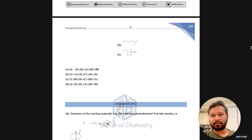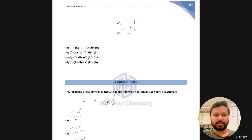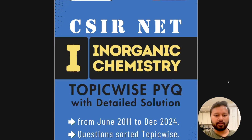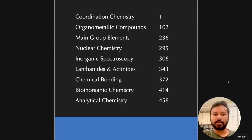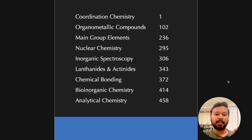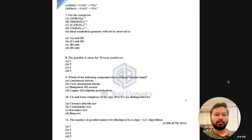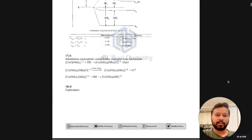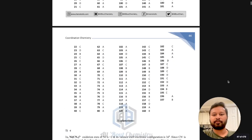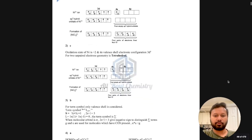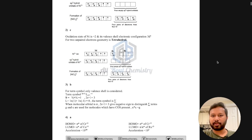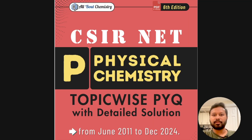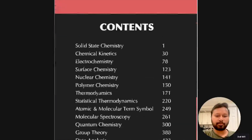Next is photochemical reactions — again, questions followed by answers. Moving to inorganic chemistry, it follows the same format. The topics covered are: coordination chemistry, organometallic chemistry, main group elements, nuclear chemistry, inorganic spectroscopy, f-block elements (lanthanides and actinides), chemical bonding, bioinorganic chemistry, and analytical chemistry. After the questions, you have an answer key followed by detailed explanations of each question.